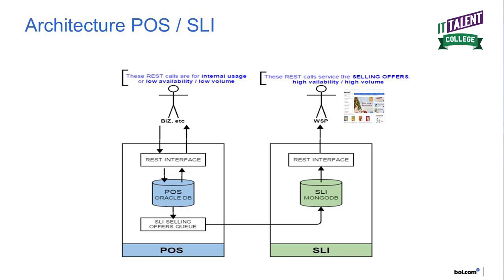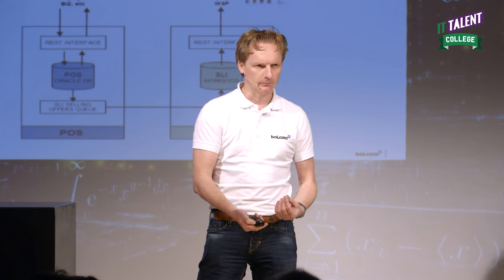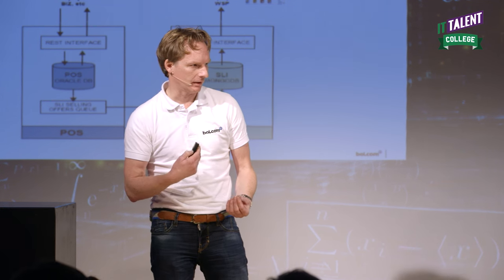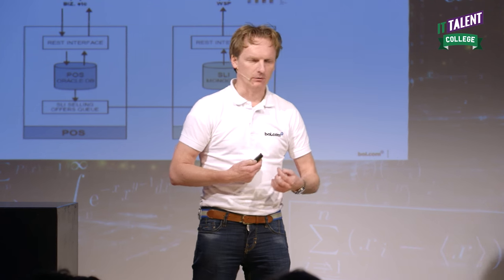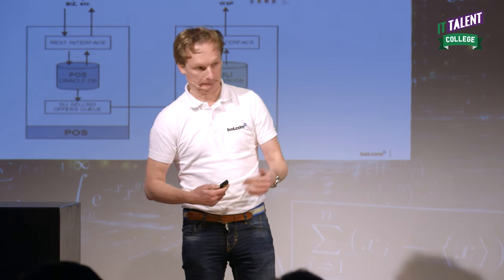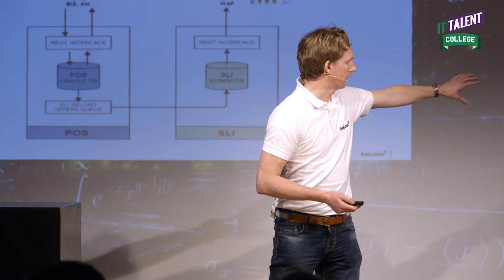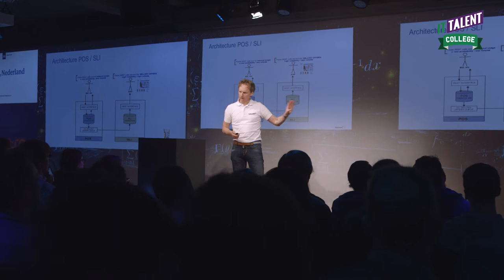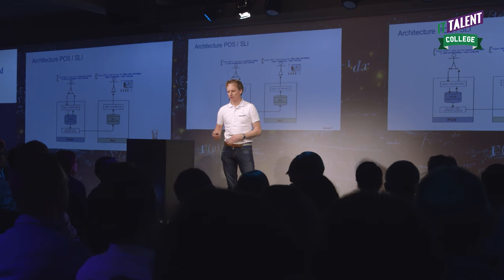So we actually moved to this type of architecture. These are simplified pictures, just to be clear. On the left side we have the old Oracle database solution, which is actually used to calculate the offers, because there are all kinds of algorithms behind it — pricing algorithms. What is the margin you want for that product? What do our competitors do? That system is used by internal users or by other systems.